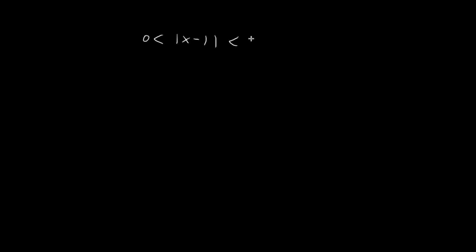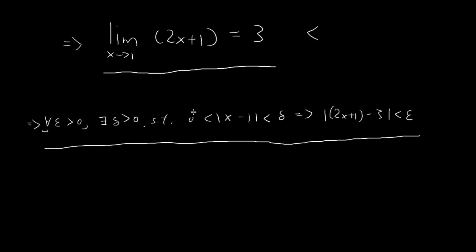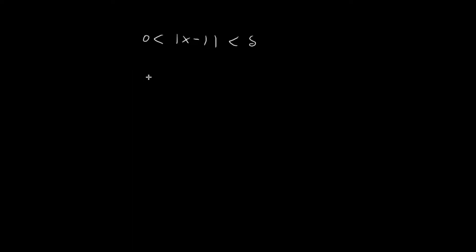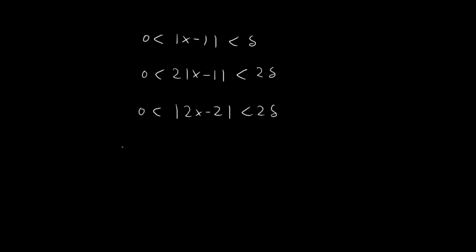In order to begin, I'm going to start off with the statement that the absolute value of x minus 1 is larger than 0 and smaller than delta — this is really just that statement over here. Then I'm going to multiply both sides by 2, which will eventually allow me to establish the epsilon-delta definition. I'm going to absorb this 2 inside the absolute value sign, and then for 2x minus 2, I can rewrite this as the absolute value of 2x plus 1 minus 3, which is smaller than 2 delta.